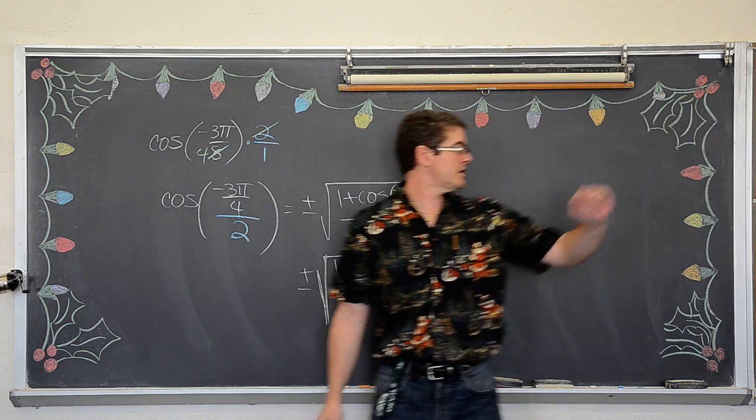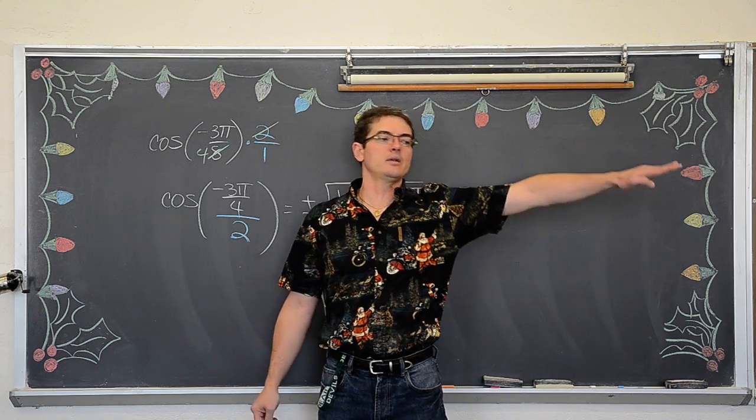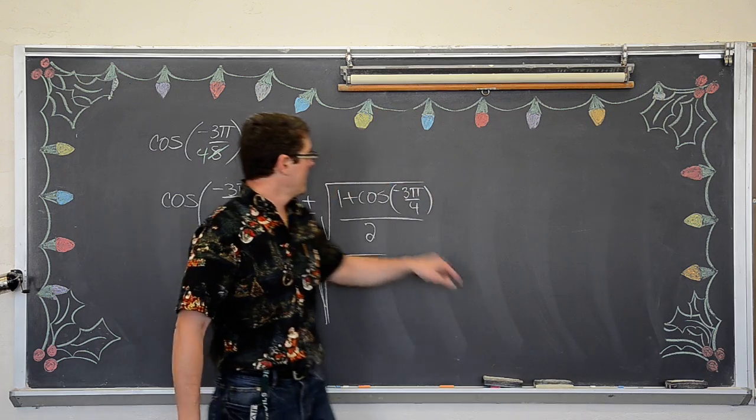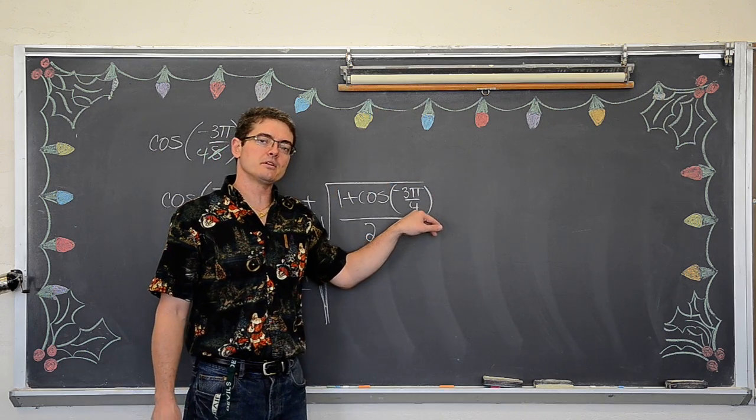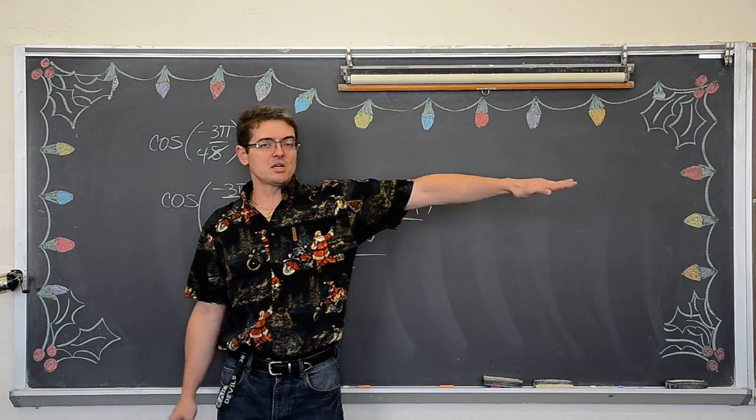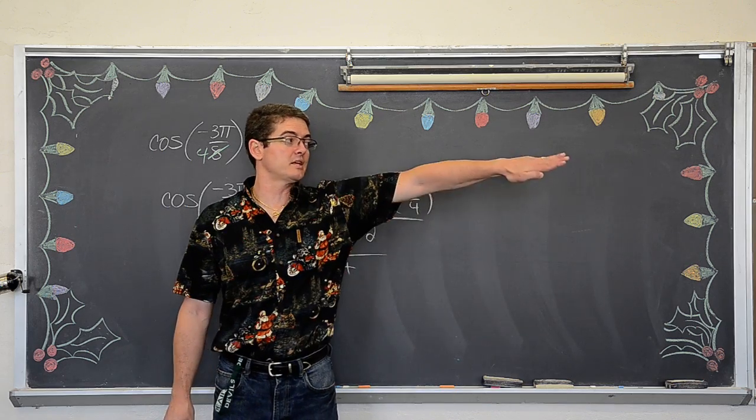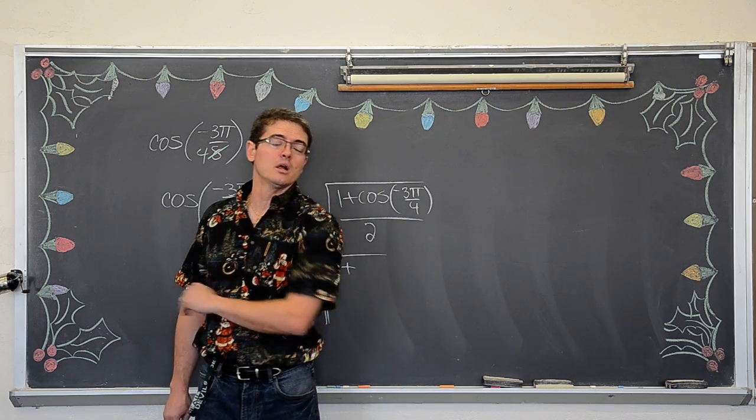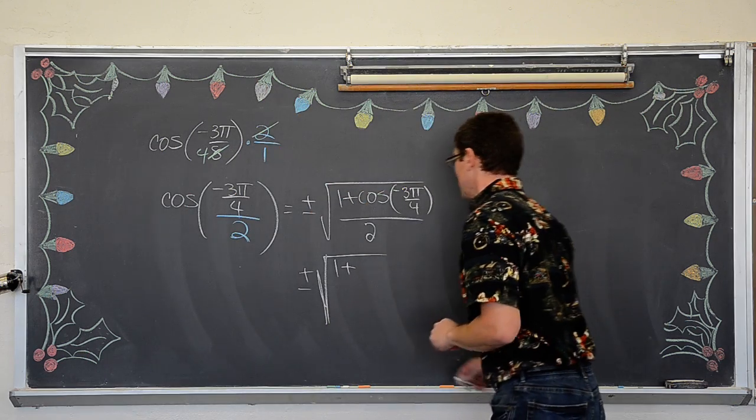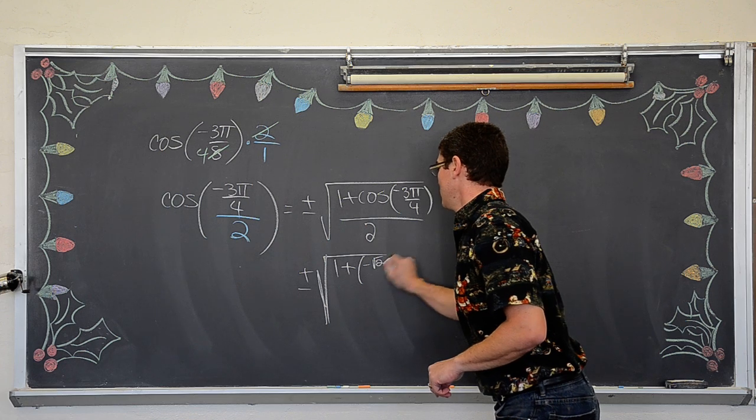So we have plus or minus the square root of 1 plus the cosine of negative 3π over 4. Now that is a negative rotation, which means we are not going to go in a counter clockwise direction, we are going to go in a clockwise direction. And any radian measure on the unit circle with the denominator of 4 is a multiple of 45 degrees. So it is going to be 0, negative 1 fourth, negative 2 fourths, negative 3π over 4. So the cosine of negative 3π over 4 is negative square root of 2 over 2.